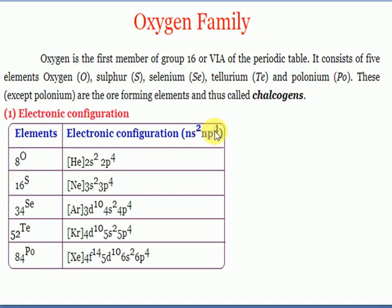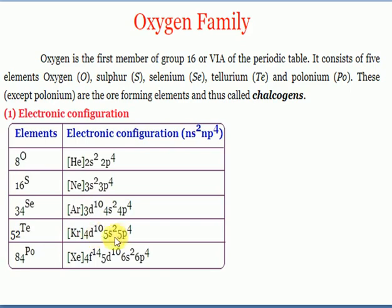The electronic configurations are: oxygen (atomic number 8) is [He] 2s²2p⁴; sulfur is [Ne] 3s²3p⁴; selenium is [Ar] 3d¹⁰ 4s²4p⁴; tellurium is [Kr] 4d¹⁰ 5s²5p⁴; and polonium is [Xe] 4f¹⁴ 5d¹⁰ 6s²6p⁴.